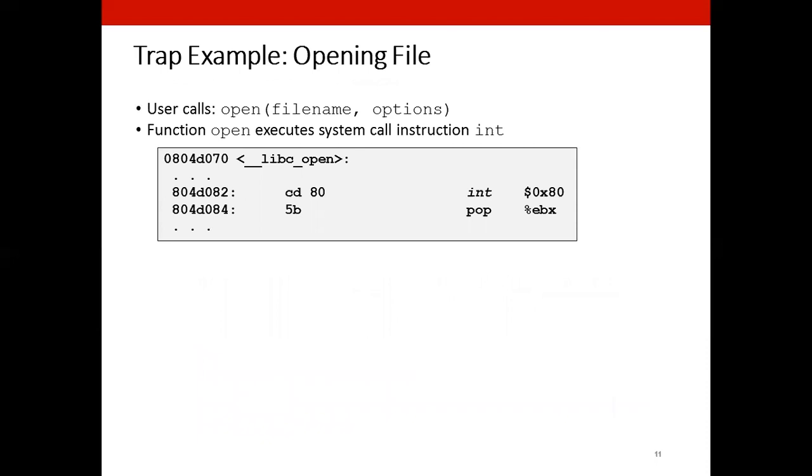So now let's see an example of a trap. Here we have an opening of a file that certainly requires an operating system service and that is going to be done through a trap. Eventually, it is going to call the open function that takes as its argument a file name and certain options.